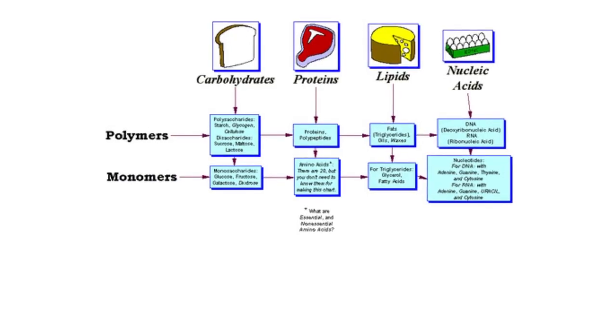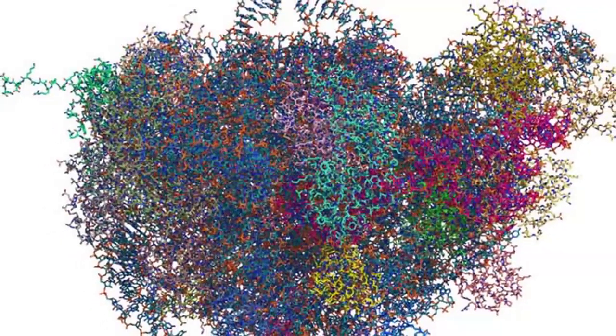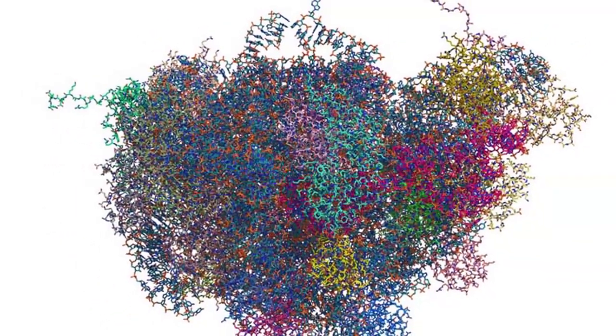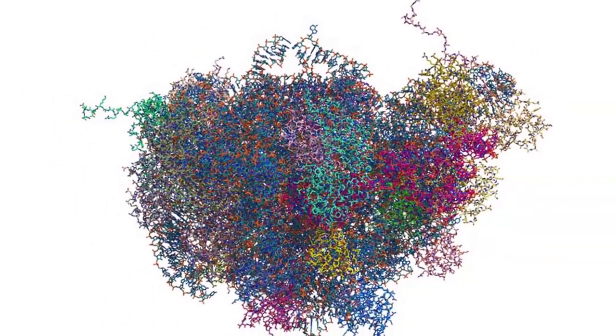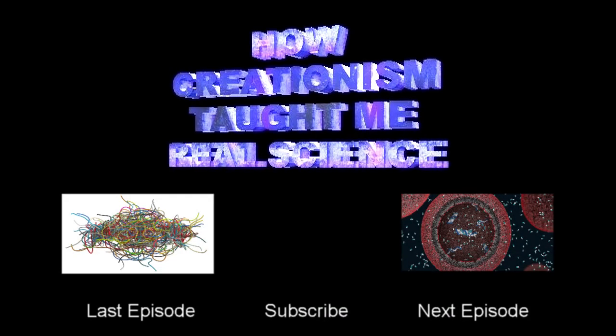Contrary to what Dr. Tour claims, however, there have been immense advances in origin of life studies since the Miller-Urey experiment. And yes, we can create all four classes of molecule that he claims we can't. And yes, we can make them function similarly or even better than their natural counterparts. They are another example of how creationism taught me real science.